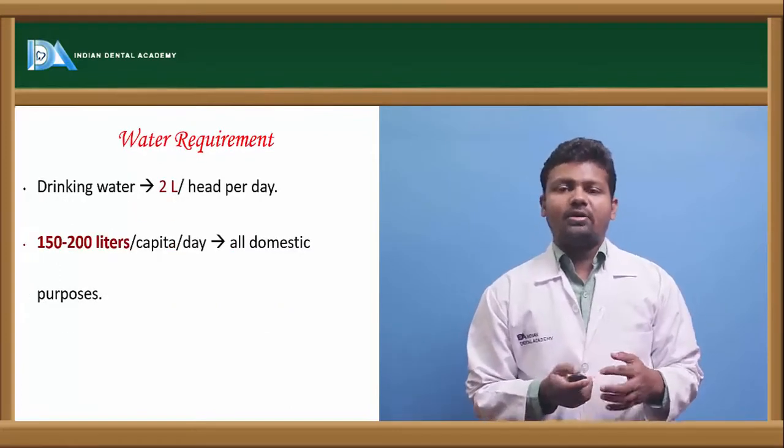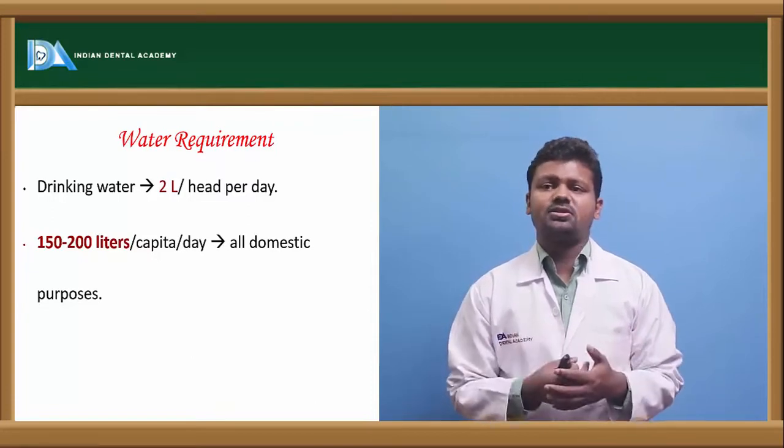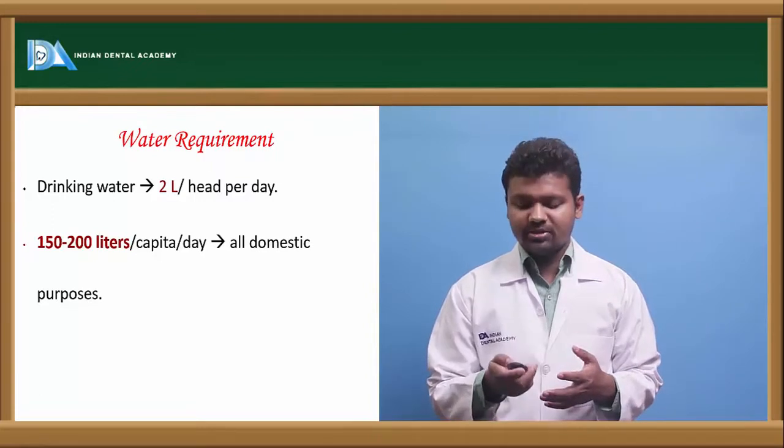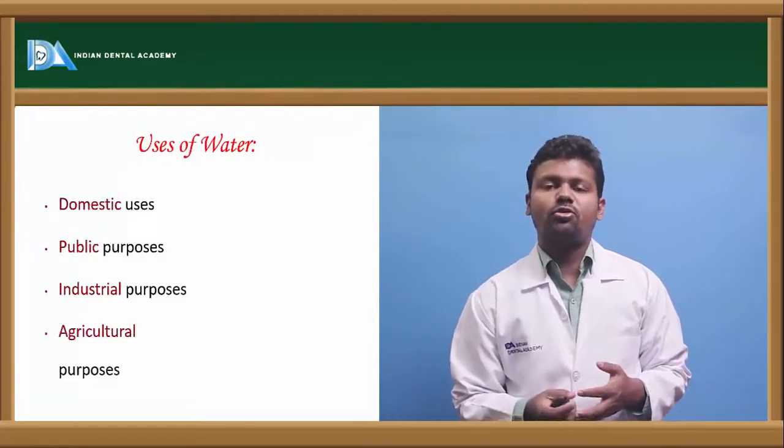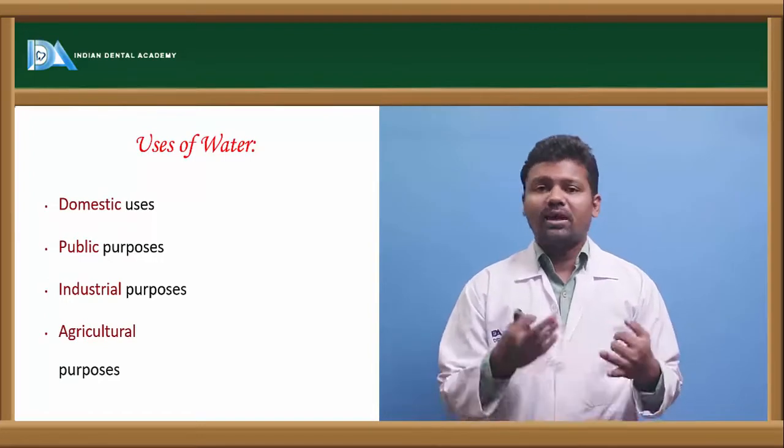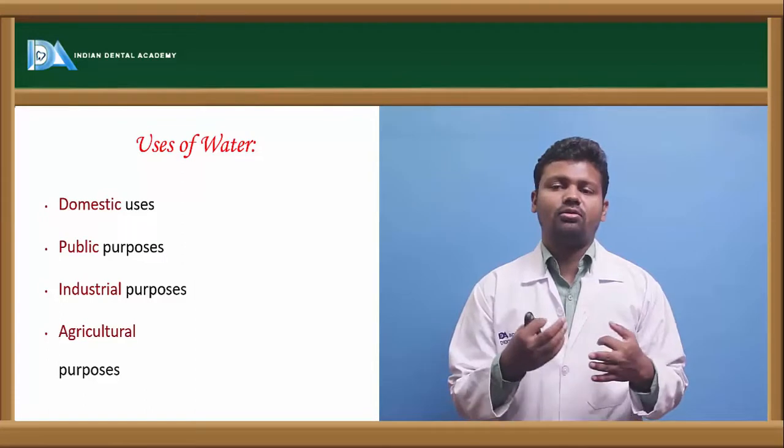The daily requirement is 2 to 3 liters per head per capita. In a family around 200 liters of water is required for all domestic purposes. Uses of water - domestic uses you can use for drinking water, for bathing, for cleaning, everything we need water.